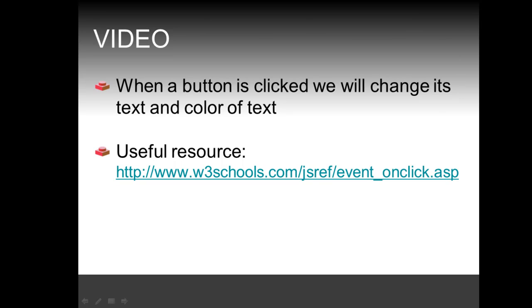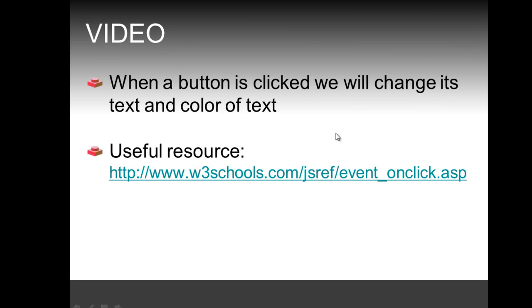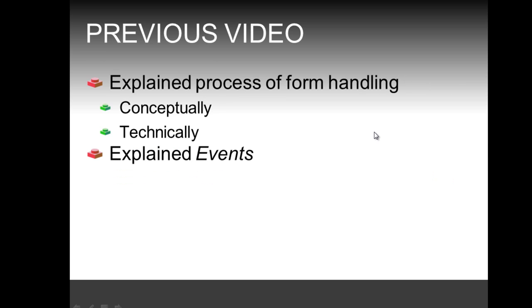In this video we will continue working on events, and more specifically we're going to see a different event: the onClick event. The use case here is when a button is clicked, we will change its text and the color of the text. There's also a URL for more information on the onClick event. In the previous video we explained the process of form handling conceptually and technically, and explained in more detail what events are.